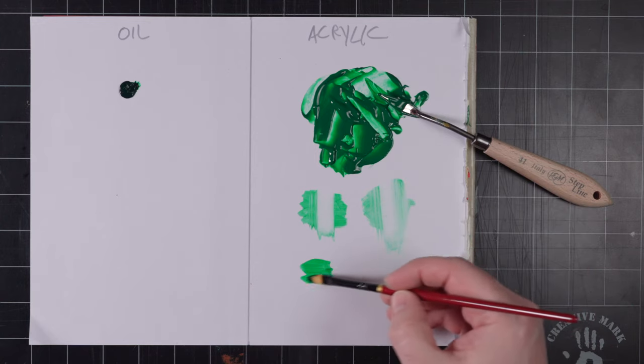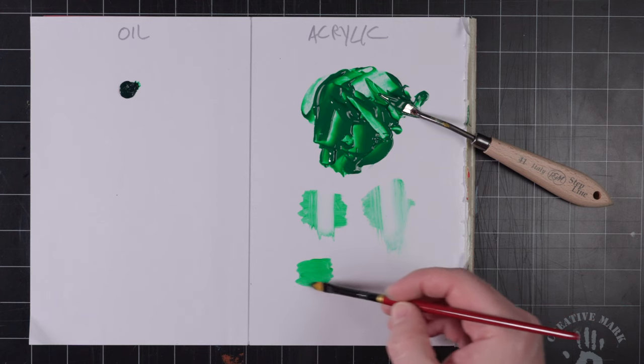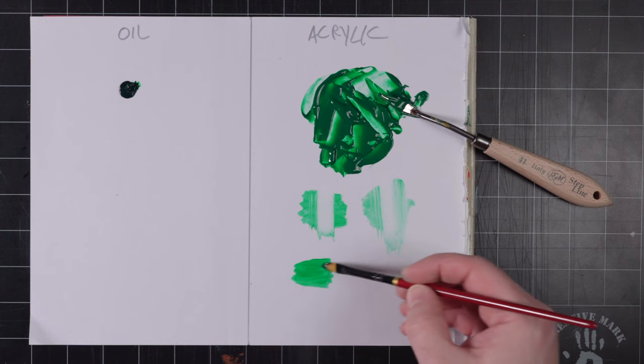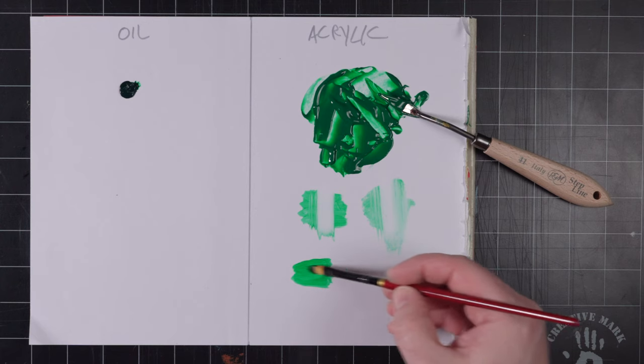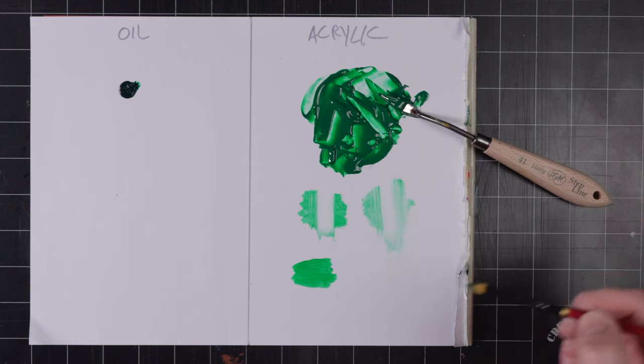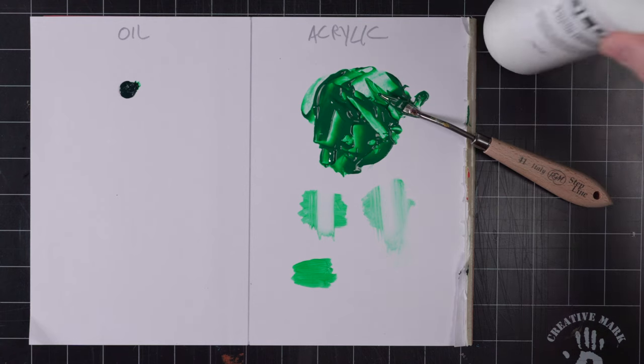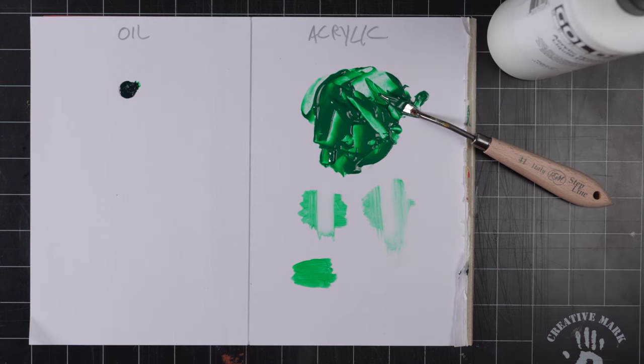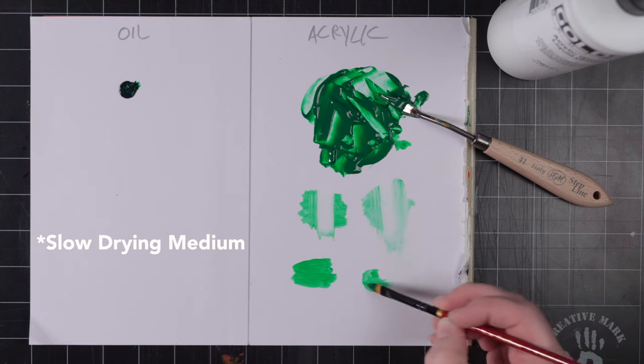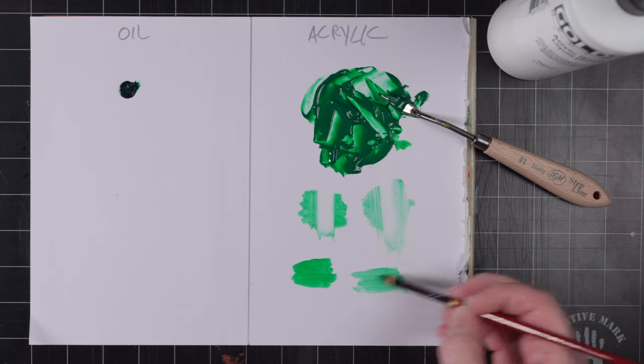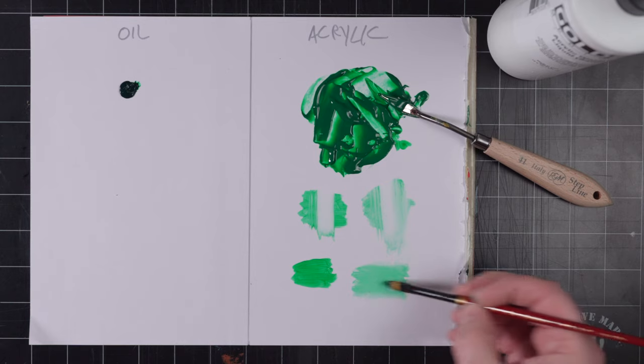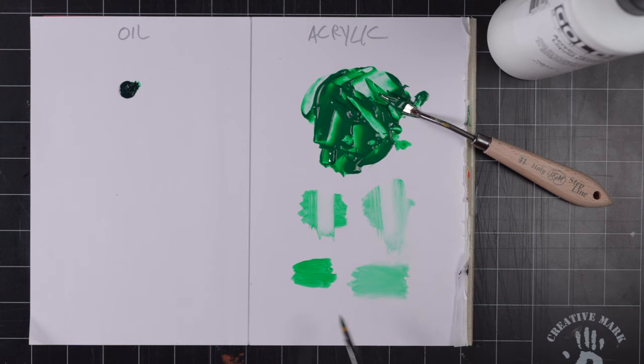You can get really dark - it's going to get even darker once it's dried - or you can get super light. Because we put in the glazing medium and a little bit of open medium, we can get really thin. So you can get really light with your glazes too. Look at that, that's really nice. So you can get pretty dark or pretty light.